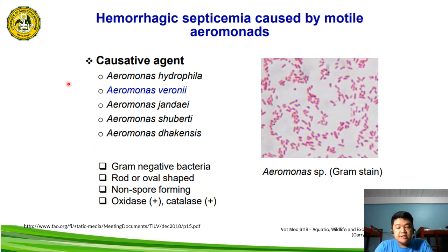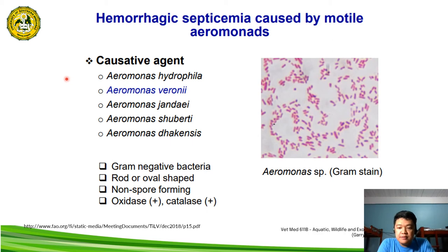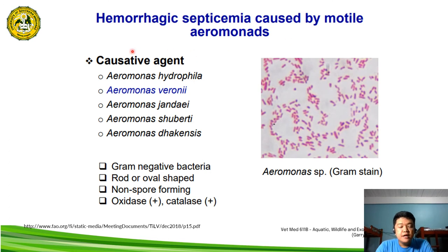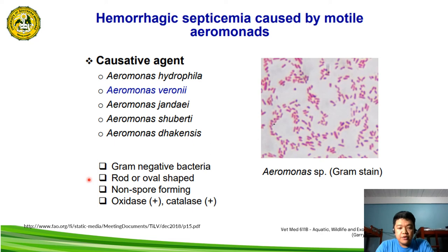Another bacterial disease of farm tilapia is hemorrhagic septicemia, caused by motile Aeromonas species — specifically Aeromonas hydrophila, veronii, jandaei, schubertii, and dhakensis. Aeromonas are gram-negative bacteria that are rod or oval-shaped, non-spore-forming, and oxidase and catalase positive. This is a gram staining of the Aeromonas species.